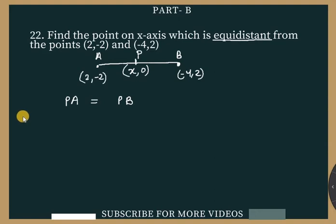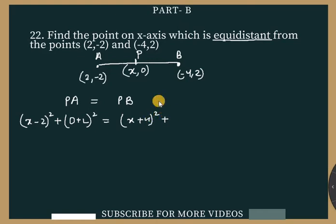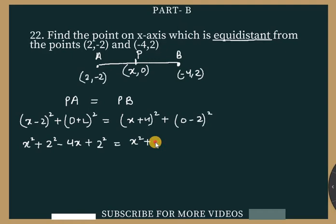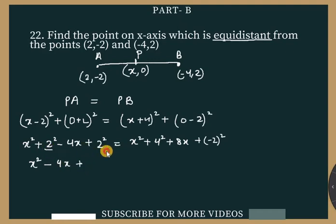Since PA = PB, we set up the equation: (x - 2)² + (0 - (-2))² = (x + 4)² + (0 - 2)². Expanding the left side: (x - 2)² + (2)² = x² - 4x + 4 + 4. And the right side: (x + 4)² + 4 = x² + 16 + 8x + 4.